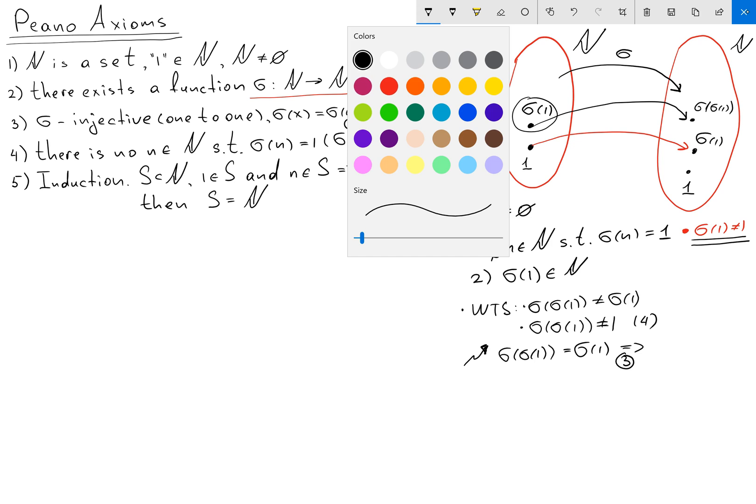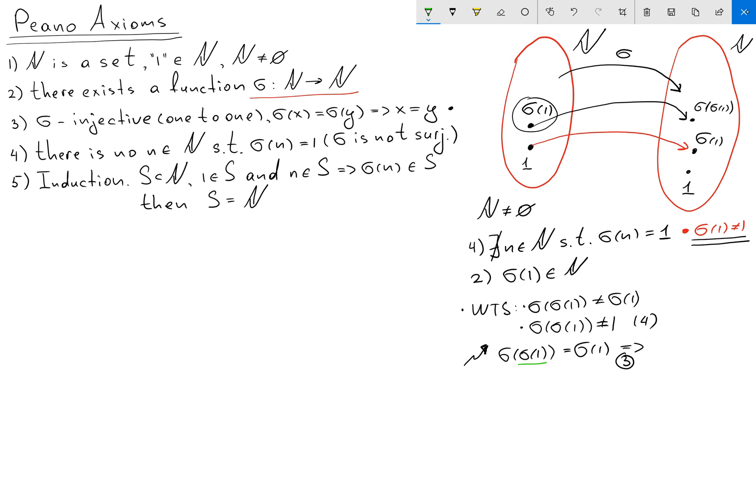Here you can see that our x is sigma of 1 and our y is 1. So from here it follows that sigma of 1 equals 1. But it's not true. Why? Because it contradicts axiom number 4.